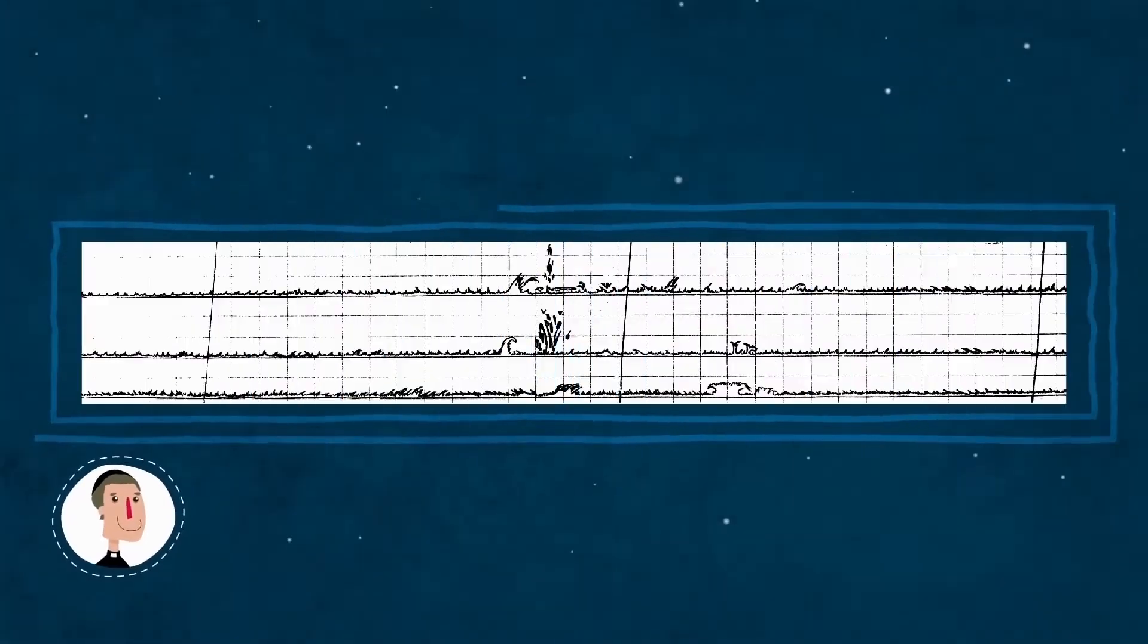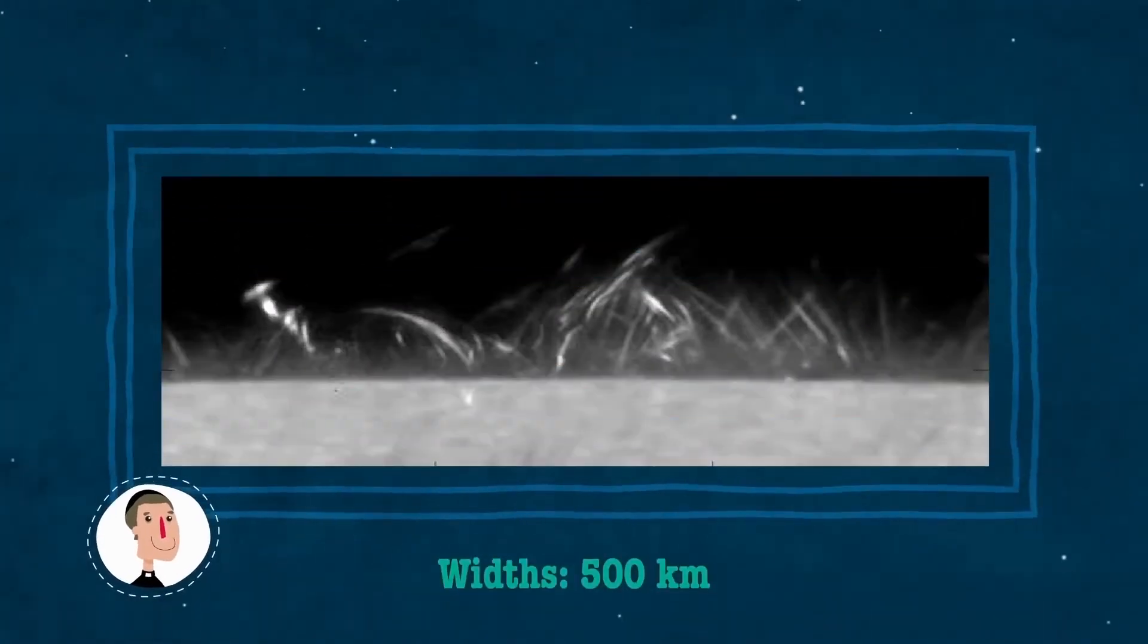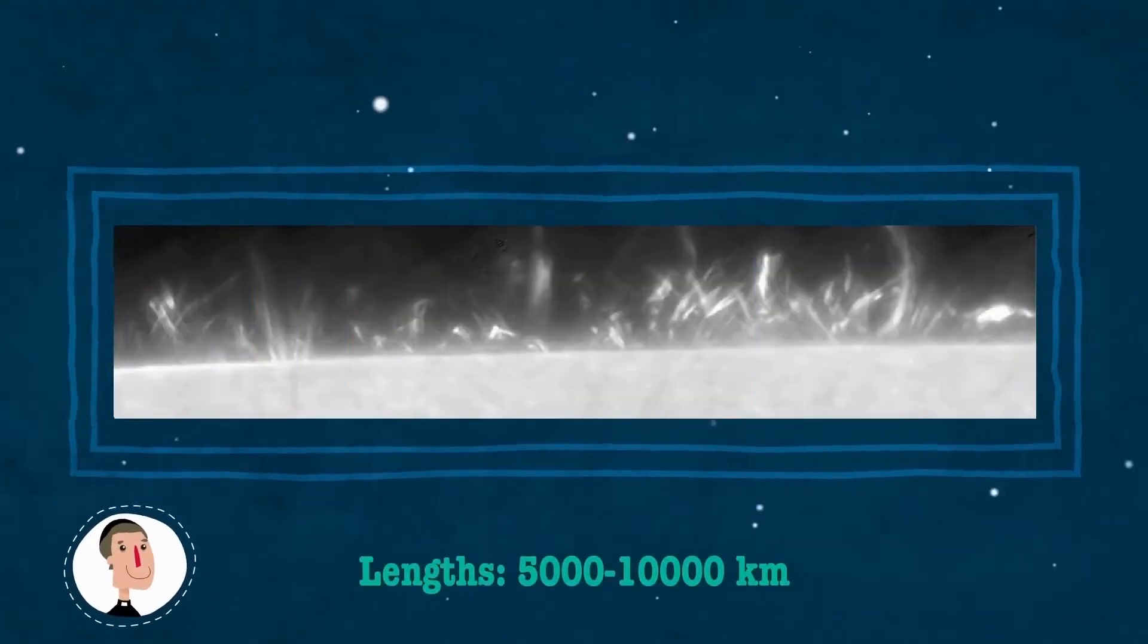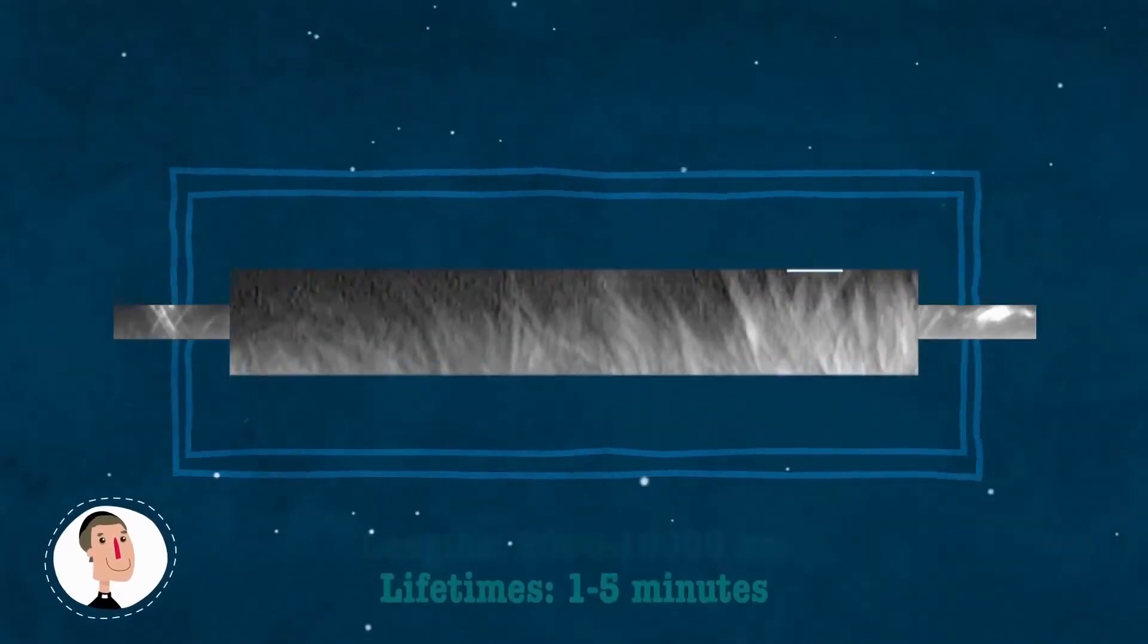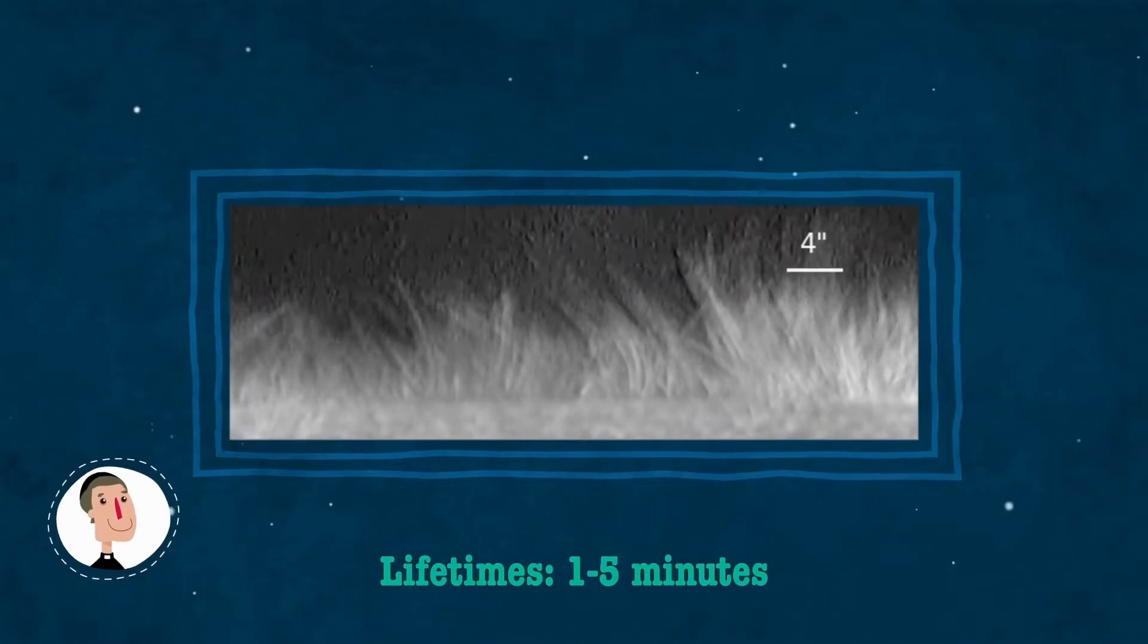Las espículas son chorros de gas en la atmósfera solar. Tienen 500 kilómetros de ancho y longitudes de varios miles de kilómetros. Pero sus vidas son muy cortas, solo unos minutos. Aparecen y desaparecen continuamente.